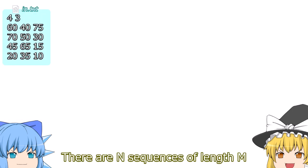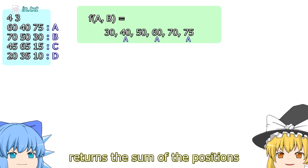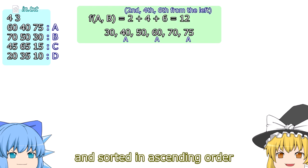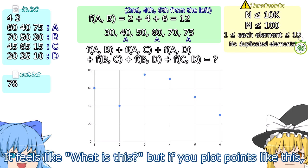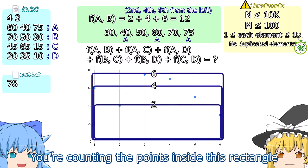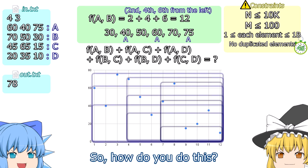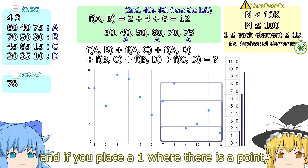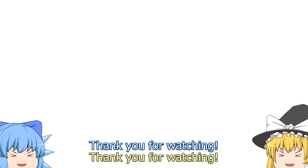Problem F: there are N sequences of length M. Consider a function that, for two sequences A and B, returns the sum of the positions of elements originating from A when both are mixed and sorted in ascending order. Calculate the sum over all pairs. If you plot points, you are counting points inside a rectangle. For all pairs, arrange all elements and do the same thing. Compress the Y coordinates and place a 1 where there is a point — it becomes interval addition, so use an appropriate data structure. That's all for today, thank you for watching.